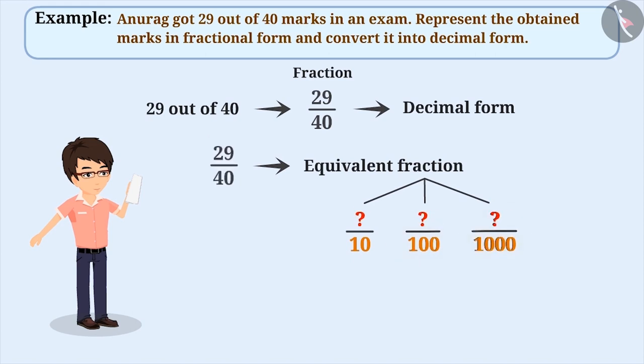Can you tell what will be the equivalent fraction of 29 by 40 whose denominator is numbers like 10, 100, or 1000? Let me tell you. We cannot make the denominator of 29 by 40 as 10 or 100 by any way.